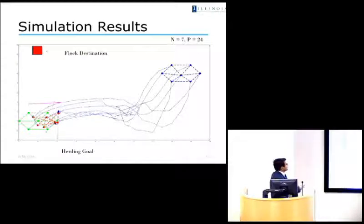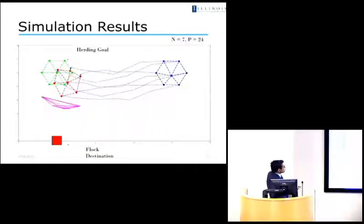And there's another simulation case. Important thing to notice here would be that the flock wanted to move in this direction, and the herding goal was somewhere here. So eventually, the system settles into a state where the falcon kind of creates a bounding surface, or a hyperplane, and then tries to ensure that the flock does not breach it.